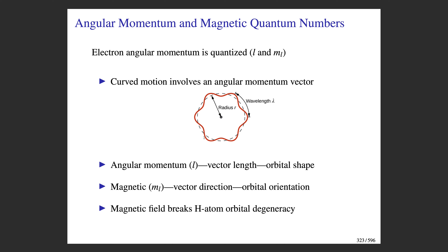The angular momentum quantum number l is related to the length of the angular momentum vector, which in turn determines the shape of the atomic orbital. That shape can have different orientations in space, and that's what the magnetic quantum number relates to — it relates to the direction the angular momentum vector points, which affects the spatial orientation of the atomic orbital.